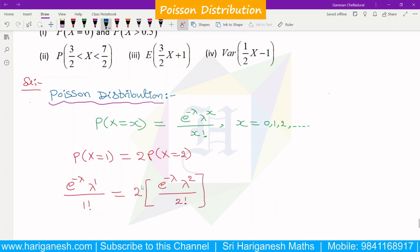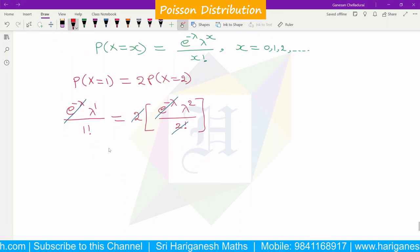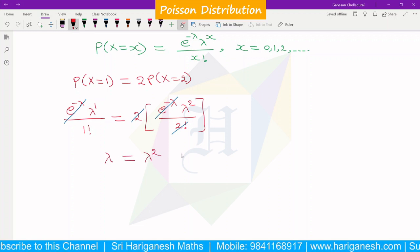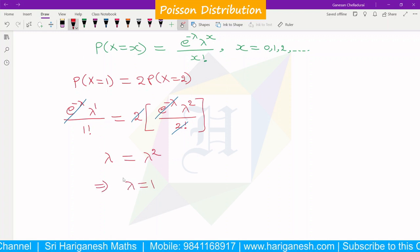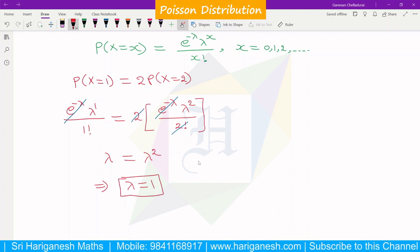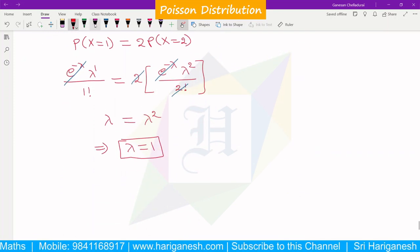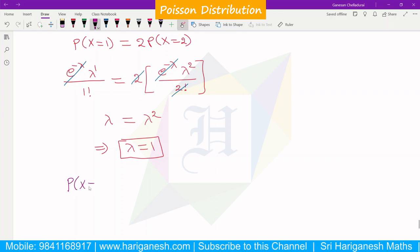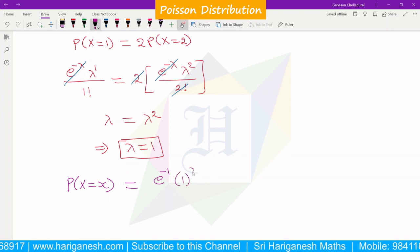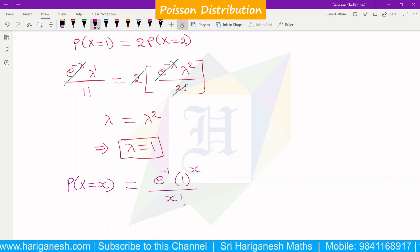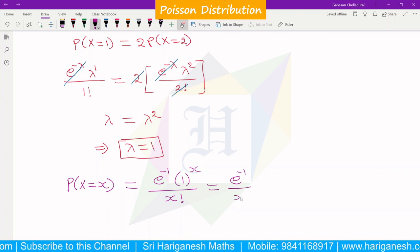Simplifying, λ = 2λ^2 / 2, so λ = 1. We will substitute the lambda value. The probability mass function is e^(-λ)λ^x / x! = e^(-1) × 1^x / x! = e^(-1) / x!.